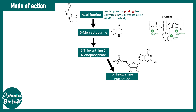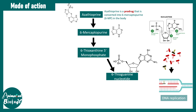6-thioguanine nucleotide is very similar to the nucleotides incorporated into DNA during replication. Like a false base, it can get incorporated into the DNA and prevent the process of DNA replication. Once DNA replication cannot happen, cells may die.